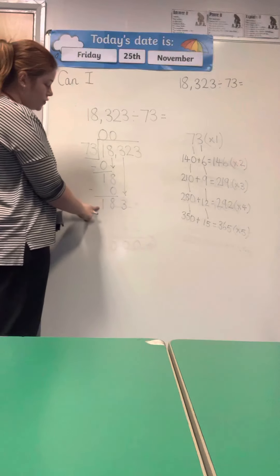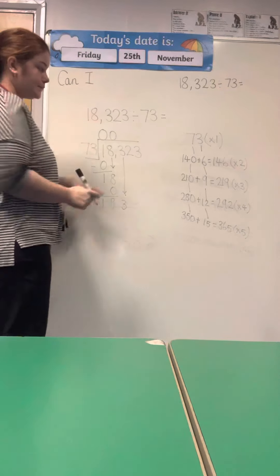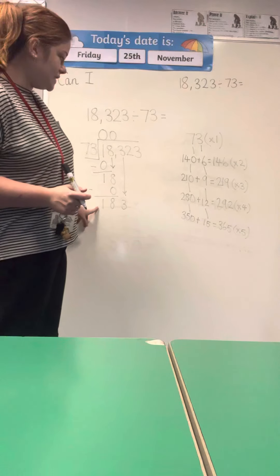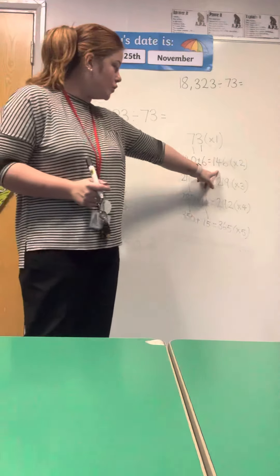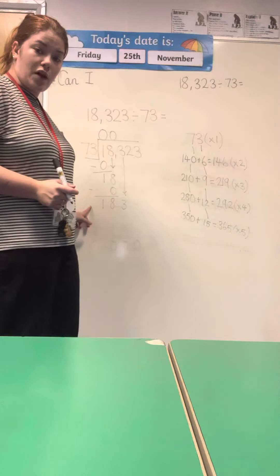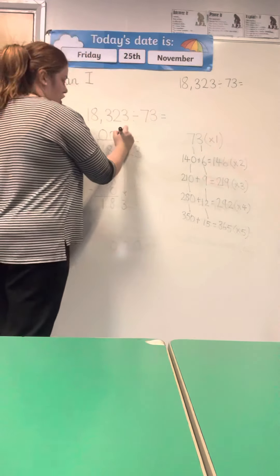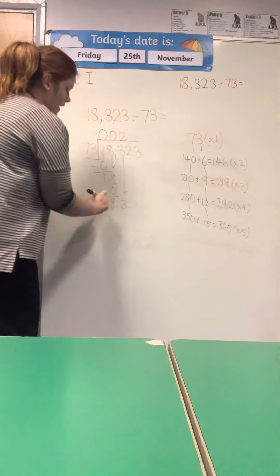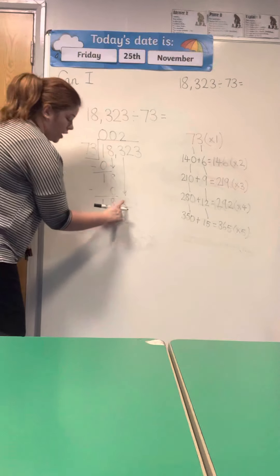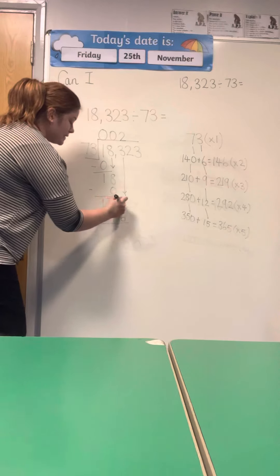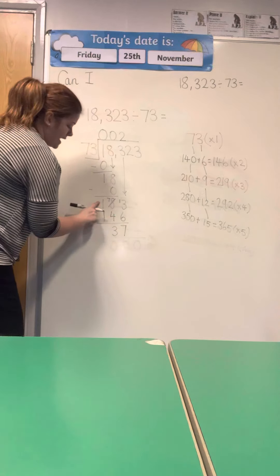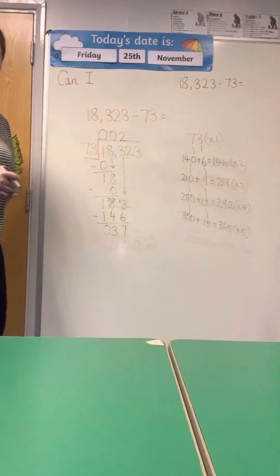My division now is 183 divided by 73. I'm going to refer to my multiples of 73. I can see that the closest multiple of 73 to 183 is 146. Remember, we can't use a larger number than the number we are dividing with. So 146 is times 2, and I'm going to pop a 2 above the digit 3, subtracting 146. I can't do 3 subtract 6, so I take 1 from the tens: 13 take away 6 is 7, 7 take away 4 is 3, 1 take away 1 is 0. That's subtract.